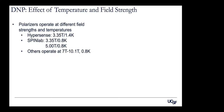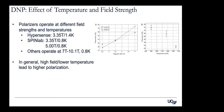Polarizers operate at different field strengths and temperatures. The Hypersense operates at 3.35T and approximately 1.4K. SpinLab systems designed for clinical use operate at higher fields — 5 Tesla — and lower temperature of 0.8K. Other hand-built polarizers go to even higher fields. In general, increasing the operating field and decreasing the temperature lead to higher polarization. Increasing magnetic field gives an increase in polarization, and decreasing temperature also gives an increase in polarization.